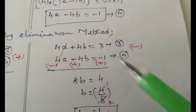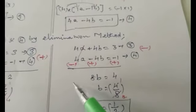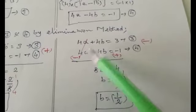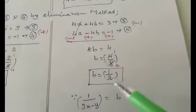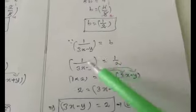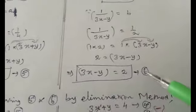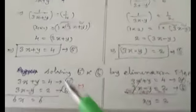To find b, subtract equation 4 from equation 3. Changing signs: 4a − 4a cancels, 4b + 4b = 8b, and 3 + 1 = 4, so b = 4/8 = 1/2. We assumed 1/(3x−y) = b = 1/2. By cross multiplication: 2 = 3x − y, so 3x − y = 2. Make it equation 6.